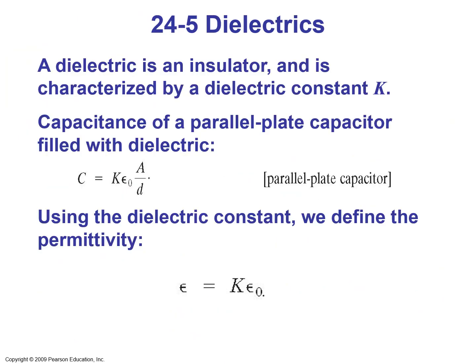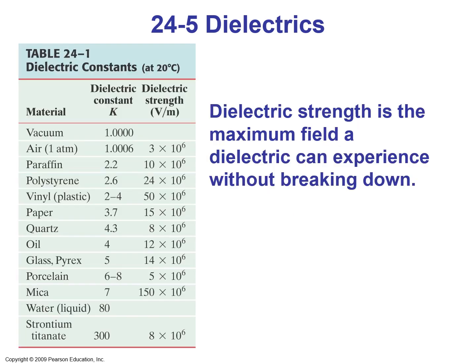Section 5: Dielectrics. A dielectric is an insulator characterized by a dielectric constant k. The capacitance of a parallel plate capacitor filled with a dielectric is increased by factor k: C = kε₀A/d. Using the dielectric constant, we define permittivity ε = kε₀. Dielectric strength is the maximum field a dielectric can experience without breaking down. Table 24-1 shows dielectric constants for different materials — vacuum has k = 1, air is approximately 1.0006, and strontium titanate can reach as high as 300.